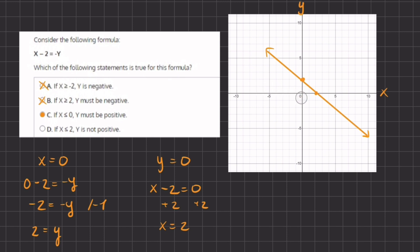Let's see why D is incorrect. If x is less than or equal to 2, y is not positive. Let's go to x is positive 2 right over here. Then y is not positive. That means that it is negative.